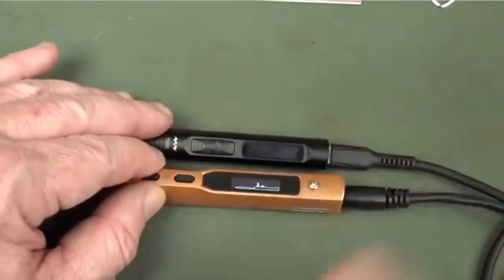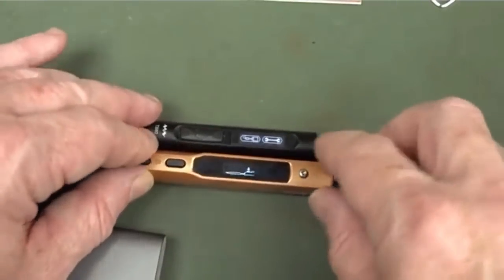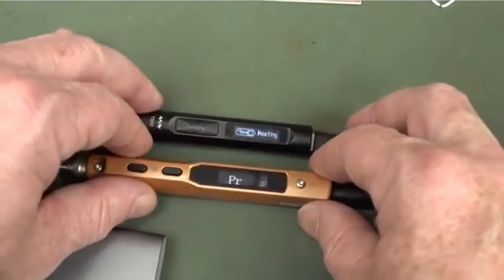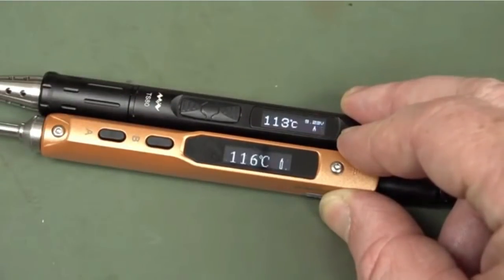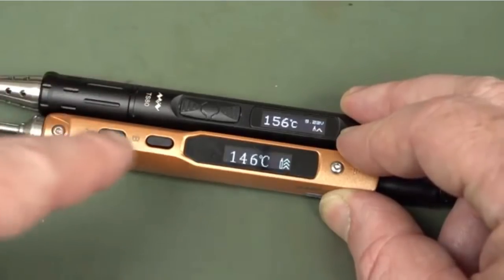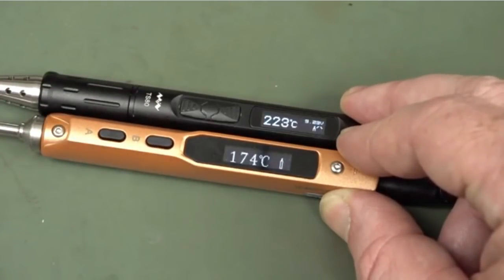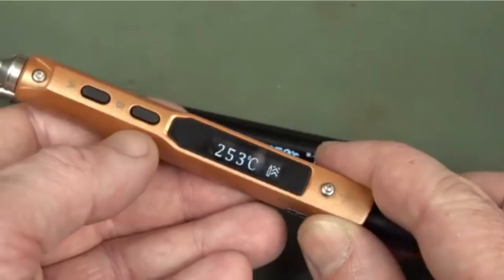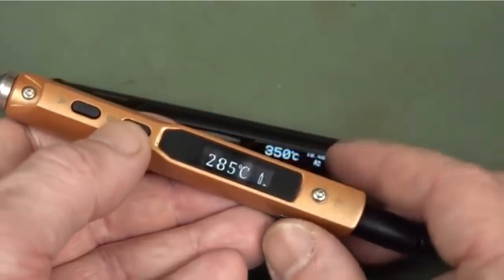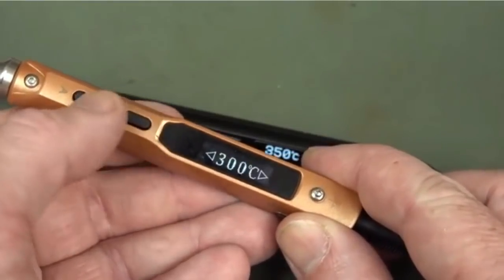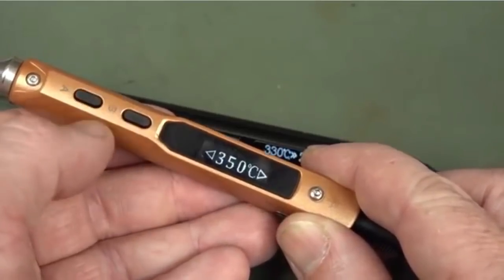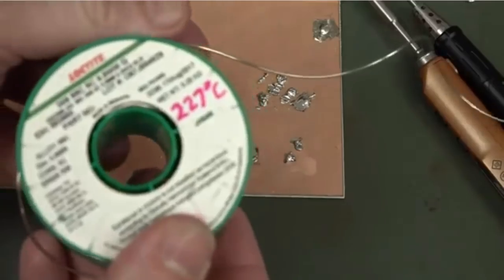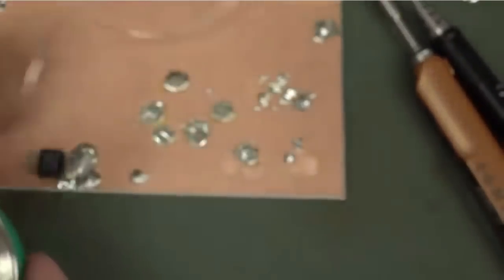I've got the TS80 from the Quick Charge 3 power bank, the TS100 from a 12-volt DC 3-amp bench power supply. The TS80 set to 350. The TS80 certainly heats up much quicker. Look at that. No contest. Got my standard lead-free Loctite solder here. Let's give it a burl.